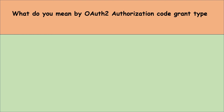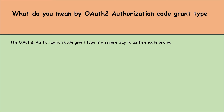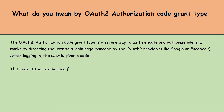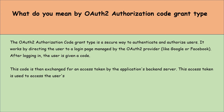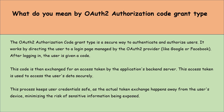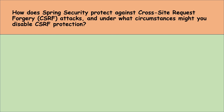What do you mean by the OAuth2 Authorization Code Grant Type? The OAuth2 Authorization Code Grant Type is a secure way to authenticate and authorize users. It works by directing users to a login page managed by the OAuth2 provider, like Google or Facebook. After logging in, the user is given a code, which is then exchanged for an access token by the application's backend server. This access token is used to access user data securely. The token exchange happens away from the user's device, minimizing the risk of sensitive information being exposed.